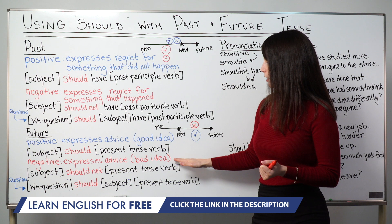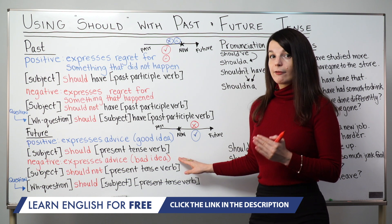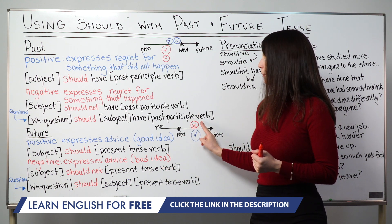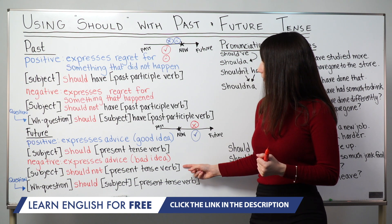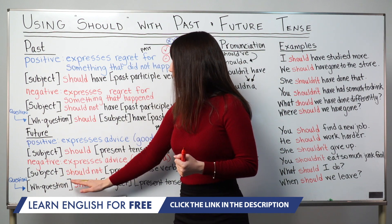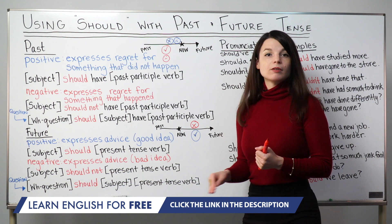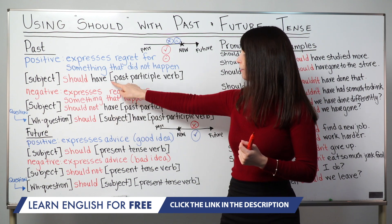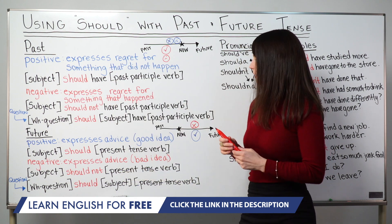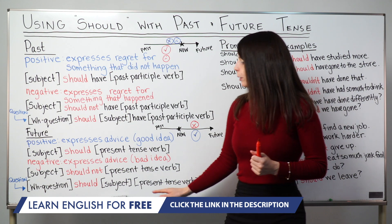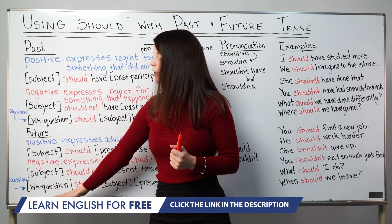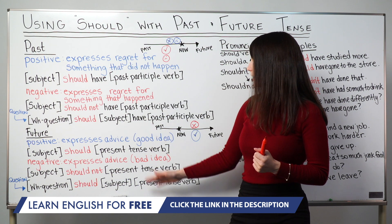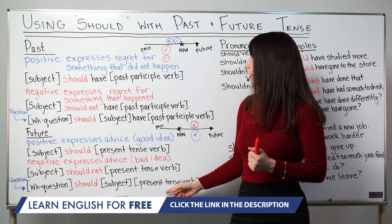For negative statements with should in the future, we're also expressing advice, but the speaker thinks it's a bad idea. Positive means good idea; negative means bad idea. The pattern is: subject plus should not, then the present tense form of the verb. For questions, we use a wh-question word plus should, our subject, and the present tense form of the verb. A key difference: future uses the present tense verb form, while past uses the past participle.